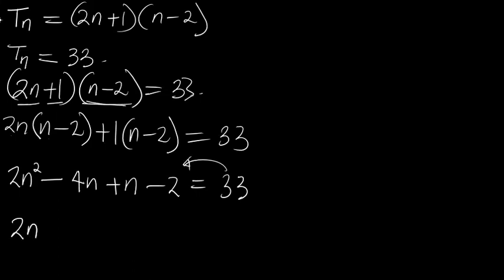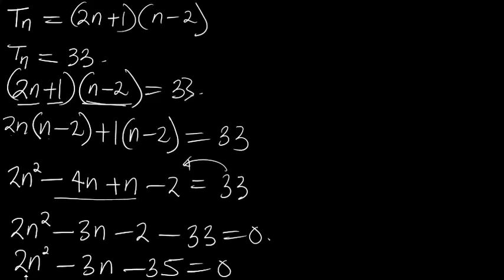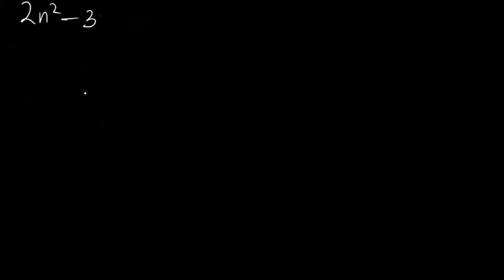Now let's move 33 to the other side. We have 2n², and combining the n terms gives −3n, then −2 − 33 gives −35, equal to 0. So we now have 2n² − 3n − 35 = 0.